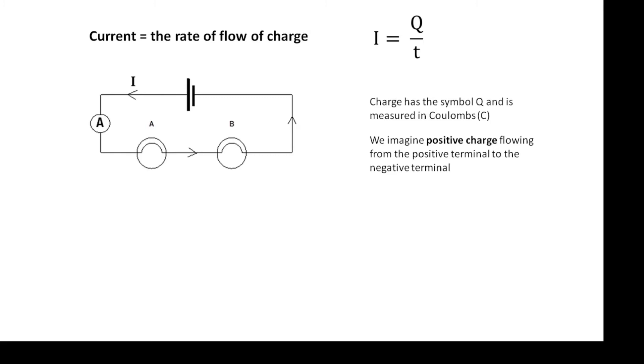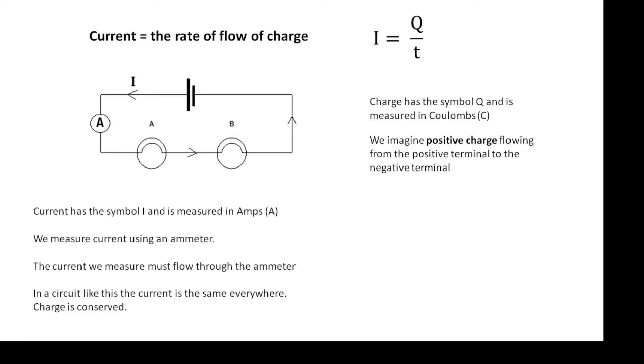And the amount of charge which flows every second is the current. Current is the rate of flow of charge. Current has the symbol capital I and it is measured in amps, which has the symbol capital A.